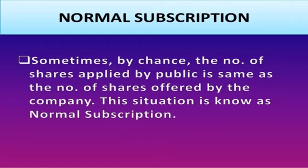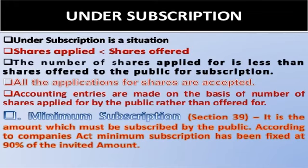Subscription of shares — normal subscription: sometimes the number of shares applied by the public is the same as the number of shares offered by the company; this situation is known as normal subscription. Under subscription: under subscription is a situation when shares applied is less than shares offered; all the applications for shares are accepted; accounting entries are made on the basis of number of shares applied for by the public rather than offered. Minimum subscription — Section 39: it is the amount which must be subscribed by the public; according to the Companies Act, minimum subscription has been fixed at 90% of the invited amount.